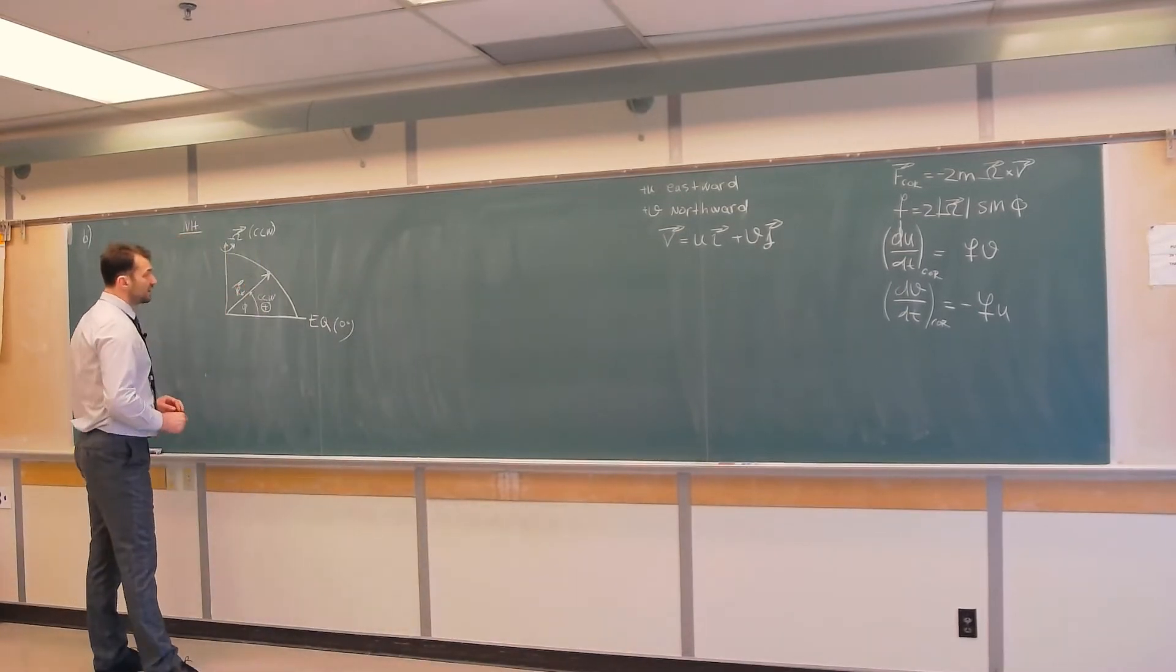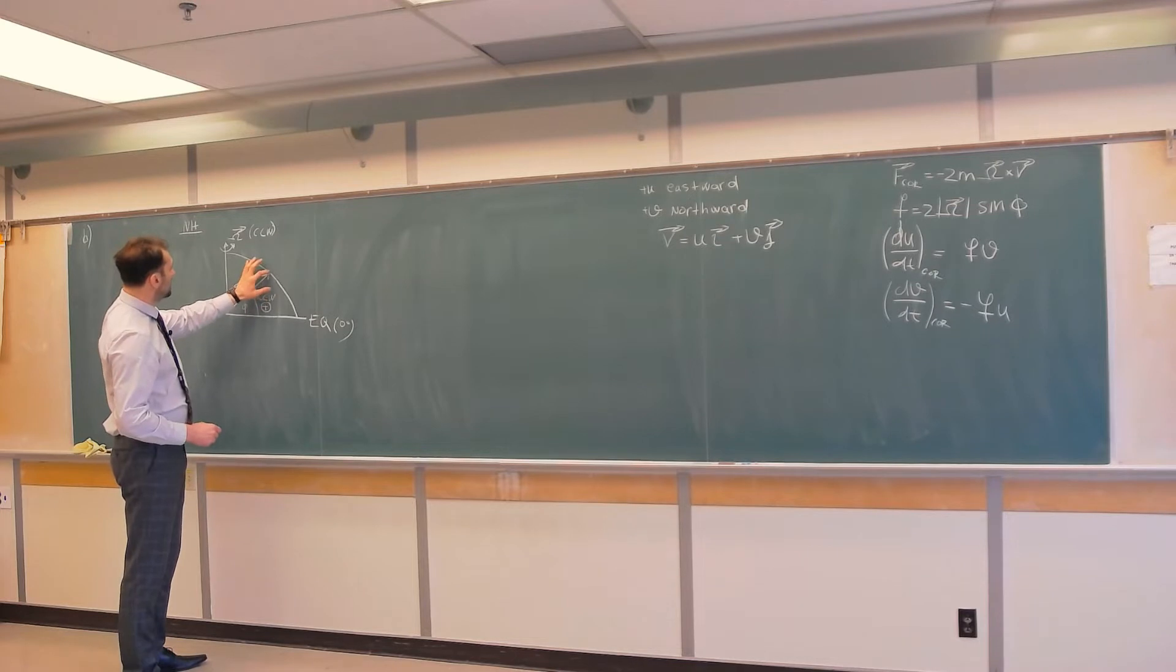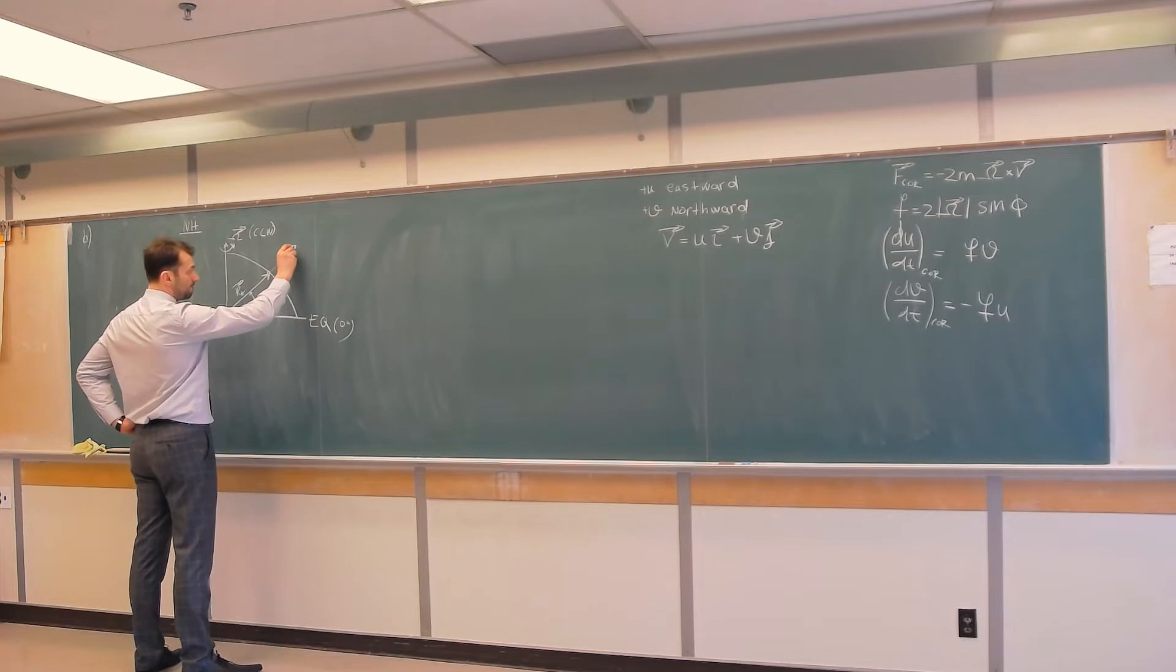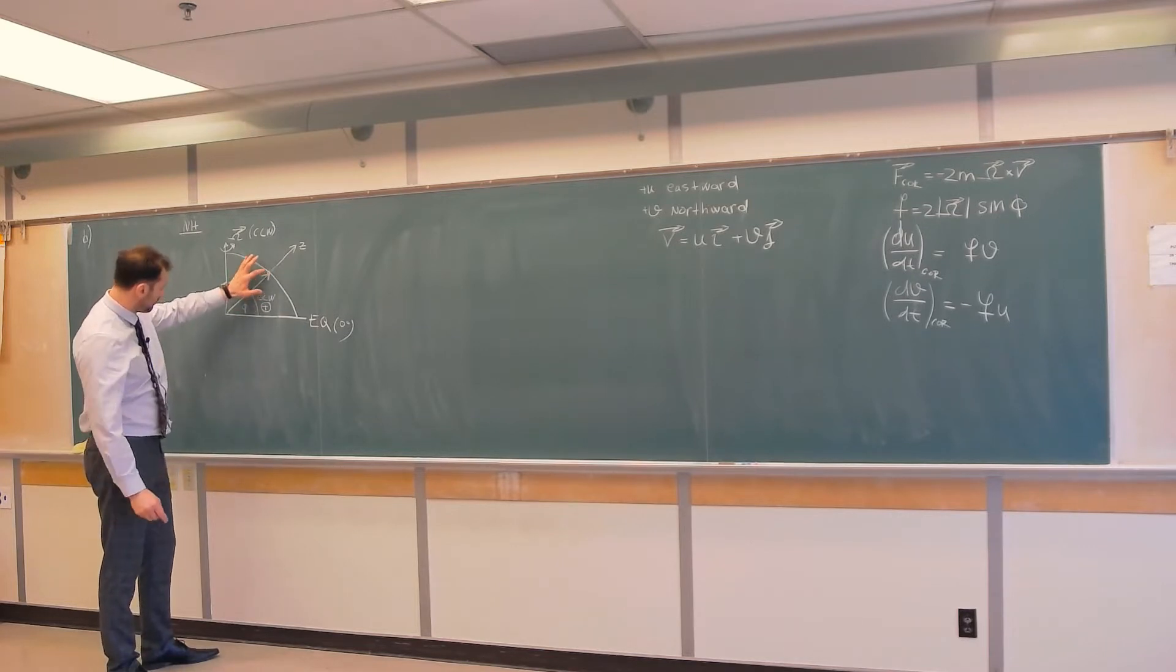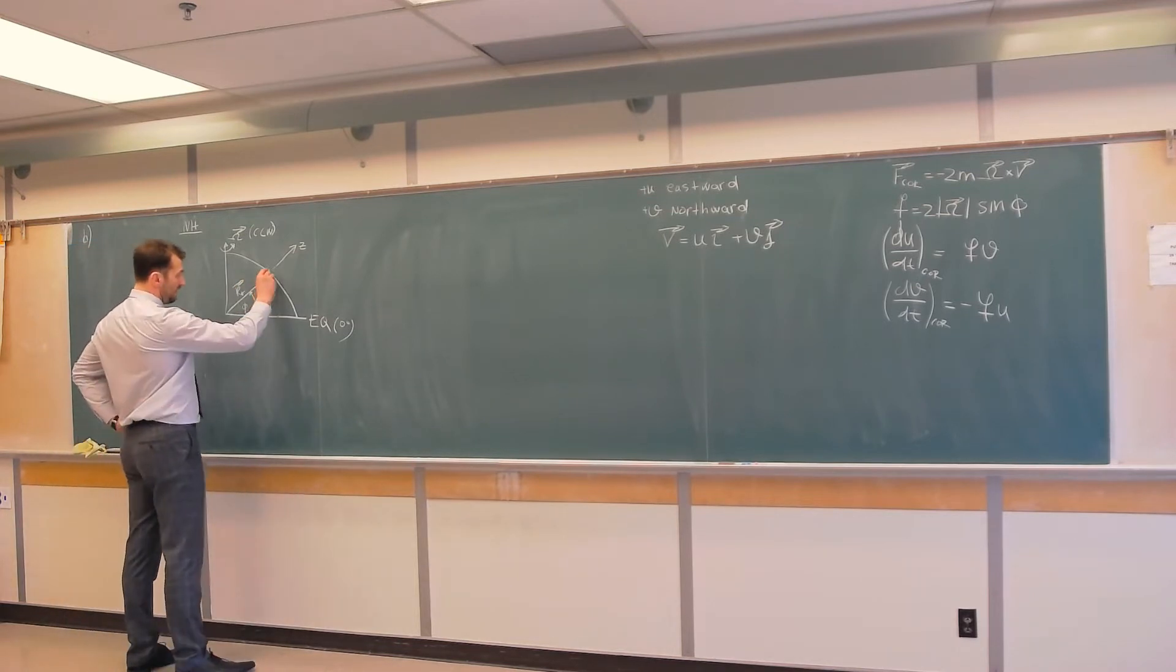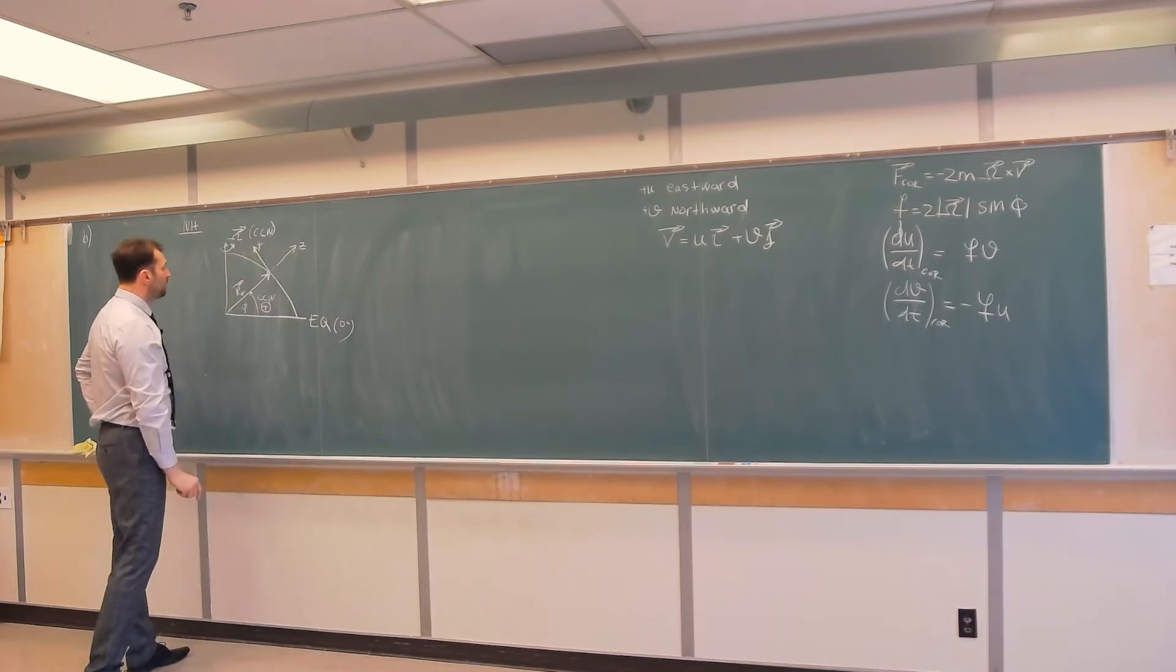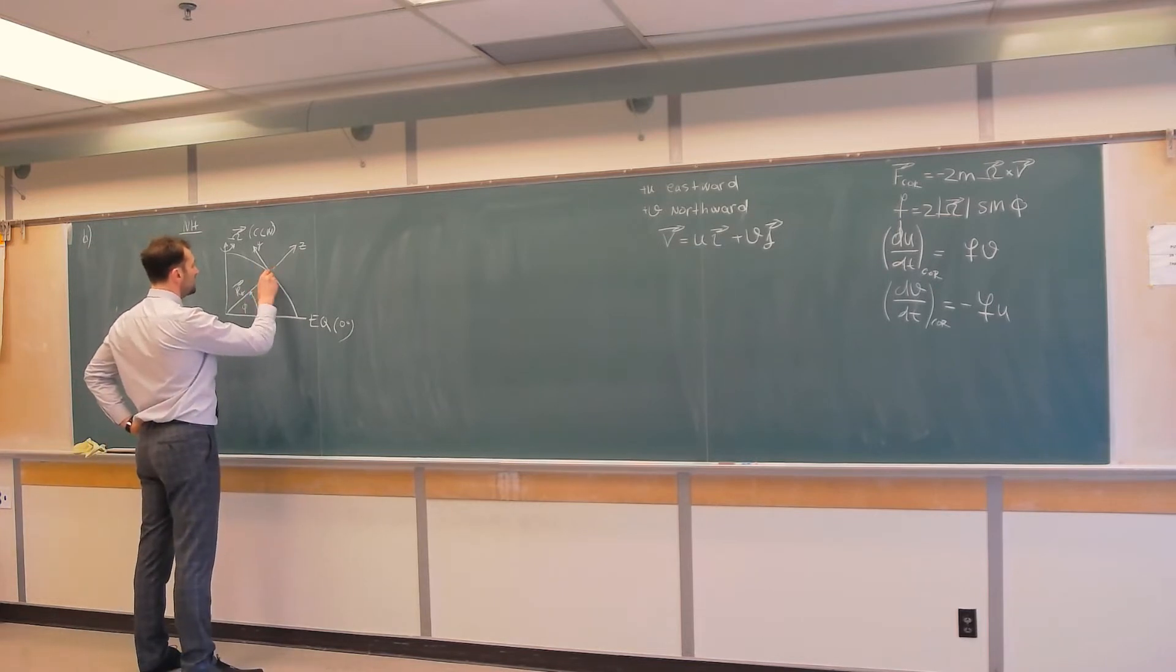Now if we are here, then what is the right-handed Cartesian coordinate system at this point? Well, height z is upward in respect to the local surface over here. Here, y direction is positive towards the north, and you can see that positive v is northward. And the positive x direction is into the page.